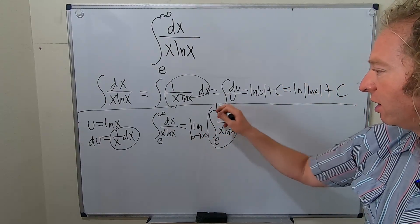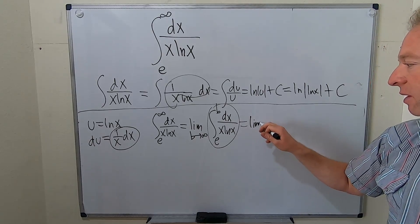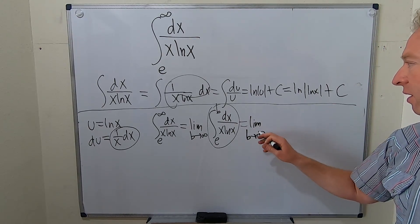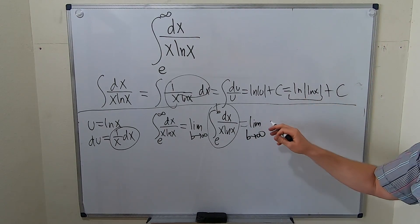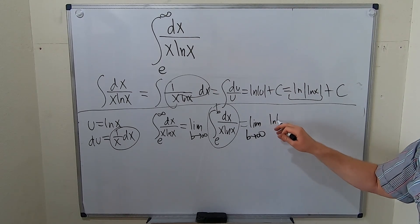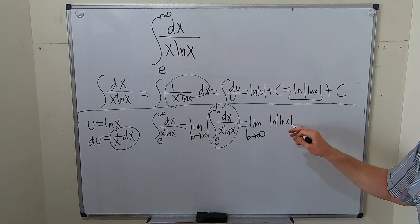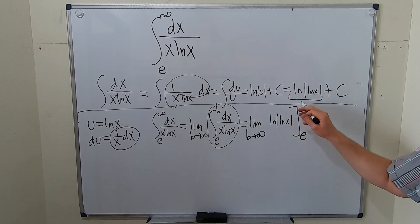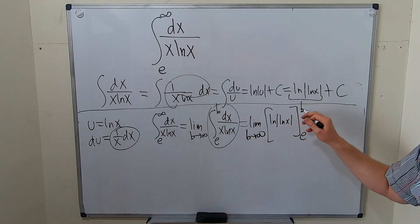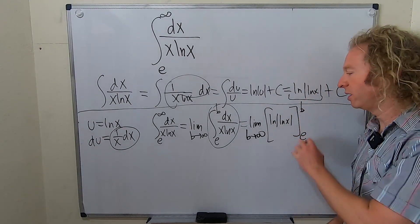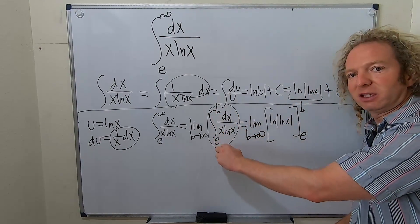This is going to be the limit as b goes to infinity, and this is the answer here. This will be ln absolute value ln x, and we're going from e to b. So it's a definite integral, so you take the indefinite one and you add the limits of integration.